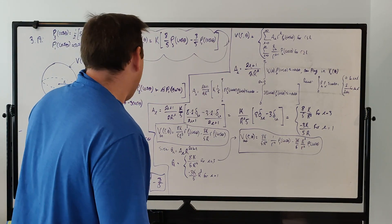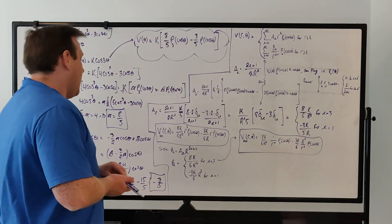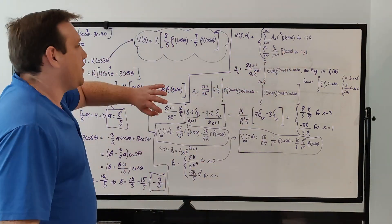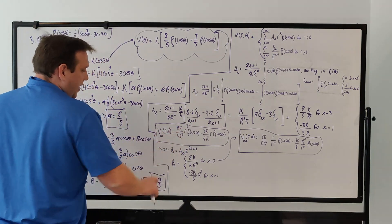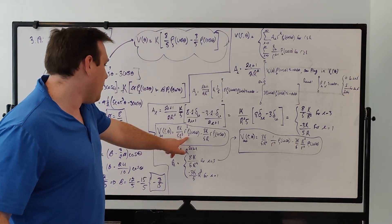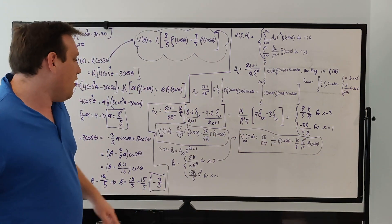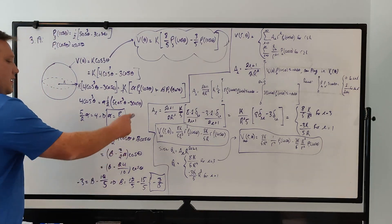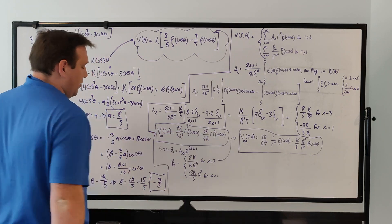Now we know both coefficients, so we can write the potential inside the sphere. The summation reduces to just l = 1 and l = 3 terms: V_inside = (8K)/(5R³) · r³ · P₃(cosθ) minus (3K)/(5R) · r · P₁(cosθ). That is the potential inside the sphere expressed in terms of Legendre polynomials.